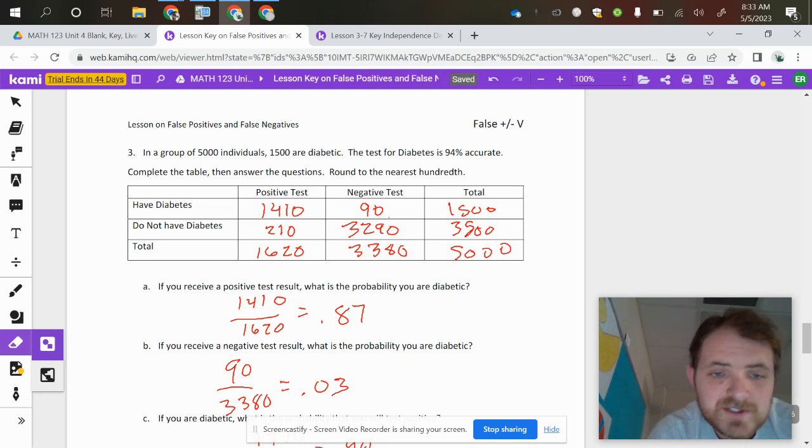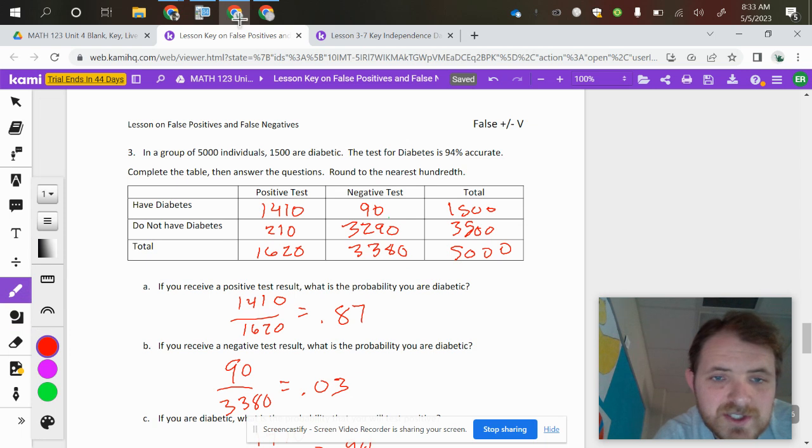If we actually answer these questions, it says, if you receive a positive test result, so that if kind of tells you what section to look at, if we are positive, what's the probability that you are diabetic? So the total is 1,620. The people with diabetes are 1,410, making you 87% likely to have diabetes if you test positive.